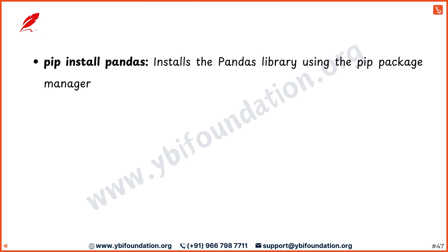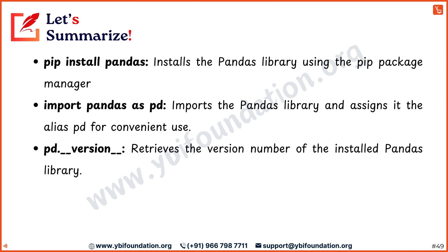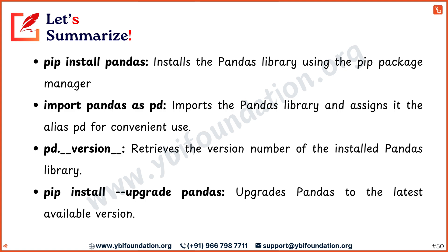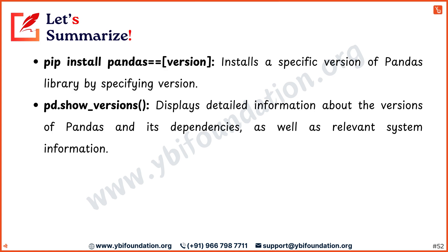Let's summarize the key learnings. pip install pandas — this command installs the pandas library using the pip package manager. import pandas as pd — this imports the pandas library and assigns it the alias pd for convenient use. pd.__version__ — retrieves the version number of the installed pandas library. pip install --upgrade pandas — this upgrades pandas to the latest available version. pip install pandas==version — this installs a specific version of the pandas library by specifying the desired version number. pd.show_versions() — this displays detailed information about the versions of pandas and its dependencies as well as relevant system information.